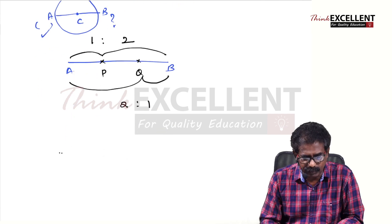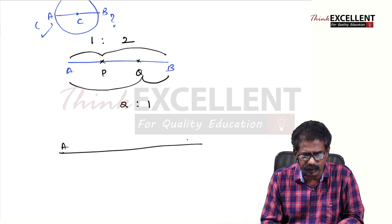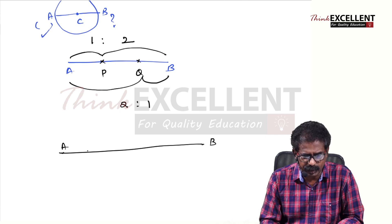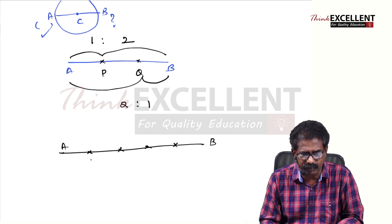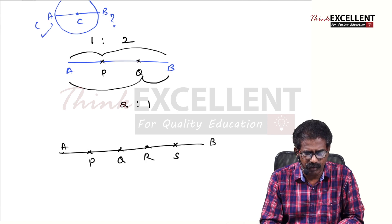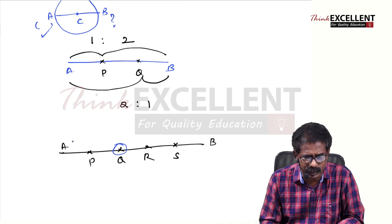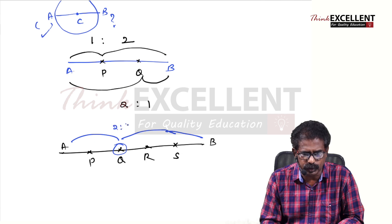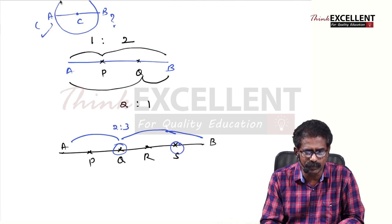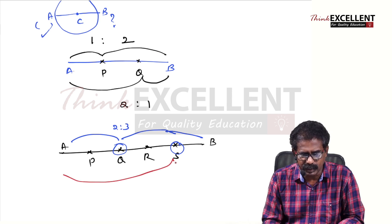Sometimes they will ask you to divide a line into five parts. For AB divided into five equal parts, you need four points P, Q, R, S. Suppose the question asks to find Q: there are two parts before Q and three parts after, so use the ratio 2 is to 3. To find S: there are four parts before S and one part after, so use the ratio 4 is to 1.